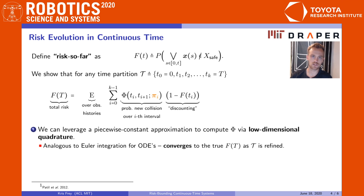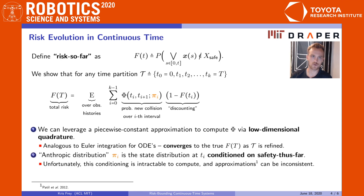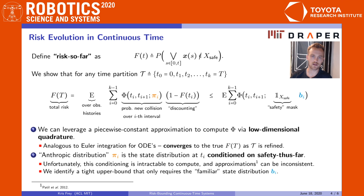However, you'll notice here that this function phi depends on a distribution pi, which we refer to as the anthropic distribution. Pi is related to the familiar state distribution, but is conditioned on safety thus far. Unfortunately, this conditioning is intractable to compute and propagate, and explicit approximations proposed in the literature result in inconsistency. To avoid all this, we identify a tight upper bound that depends only on the unconditioned distribution B. Though relatively simple, this upper bound provides surprisingly good approximation in practice.